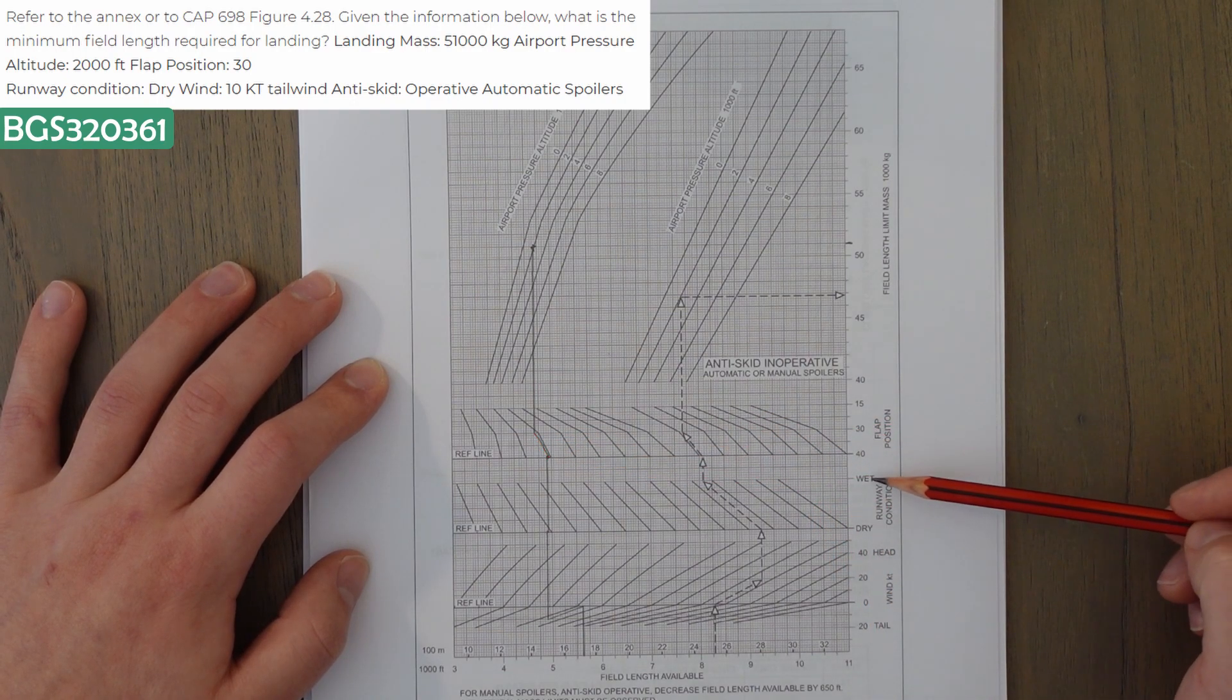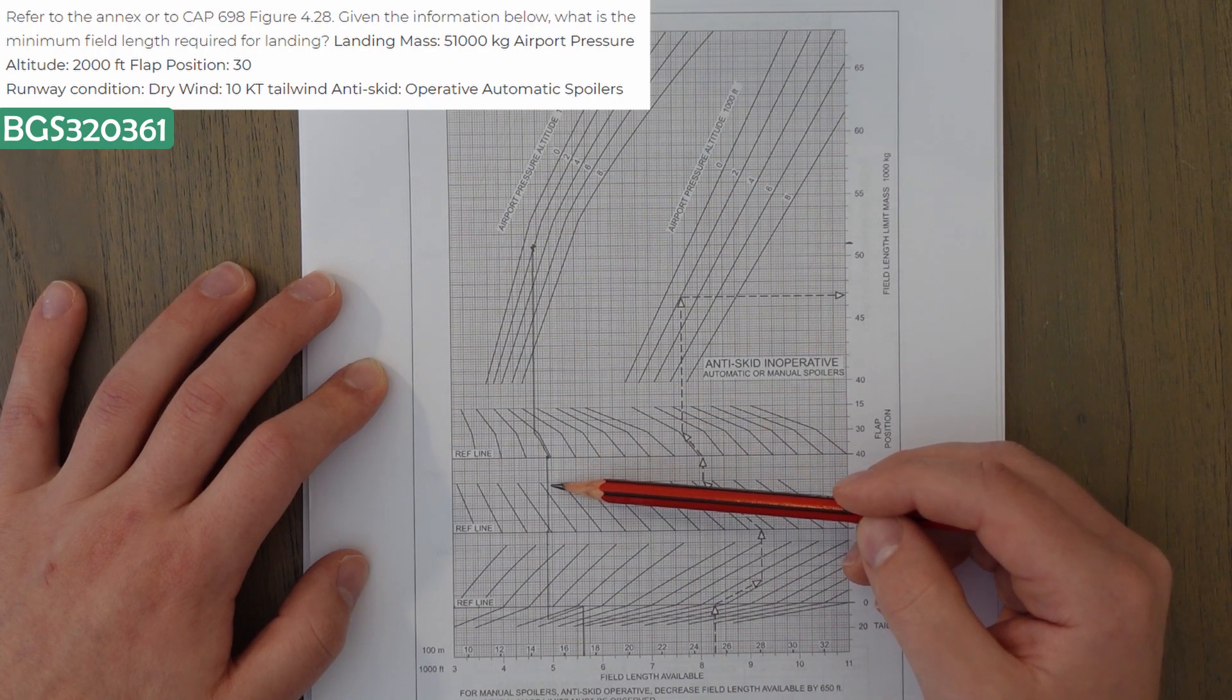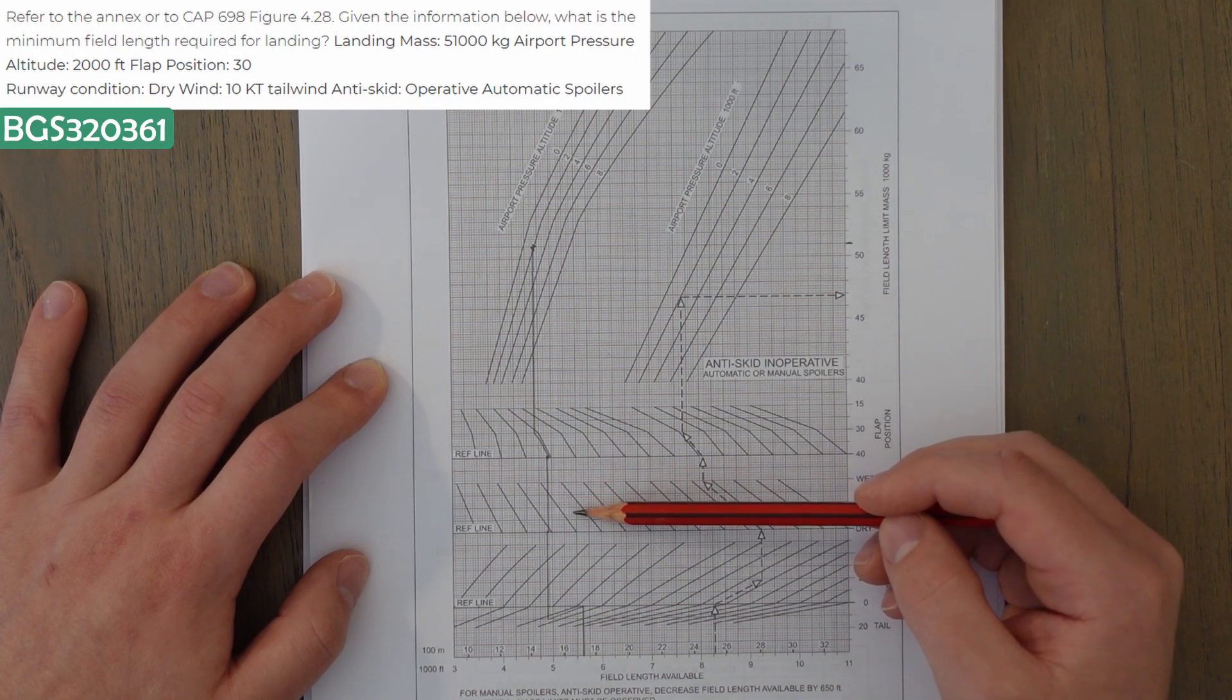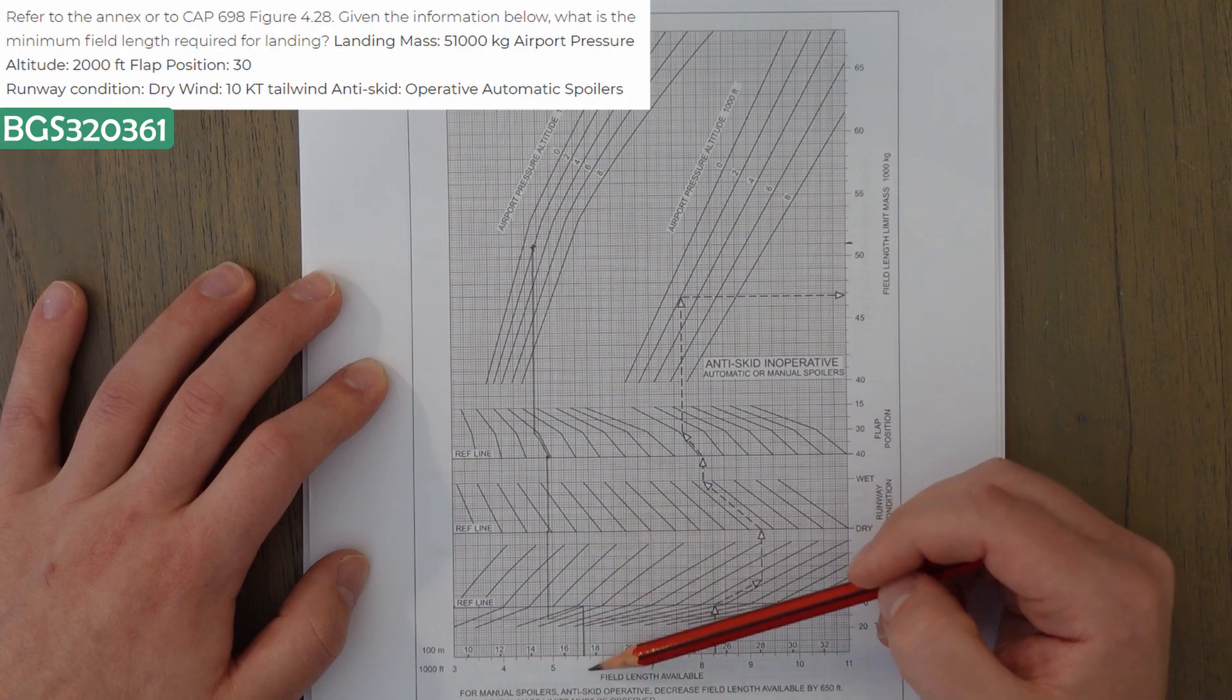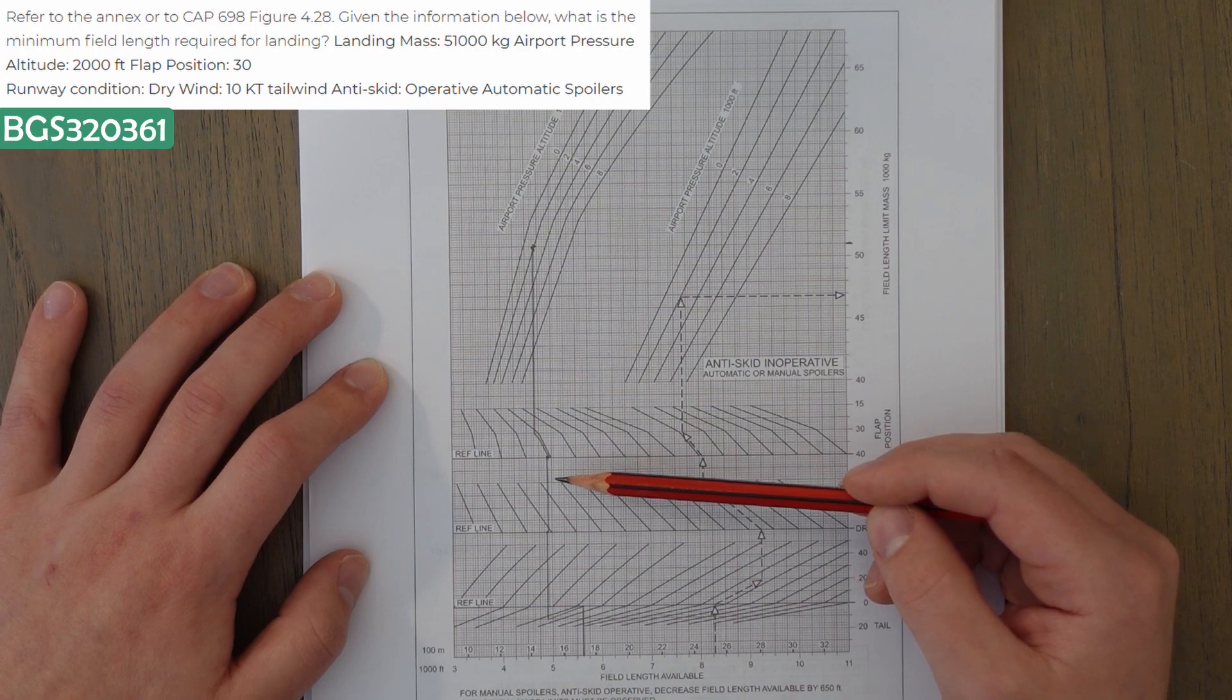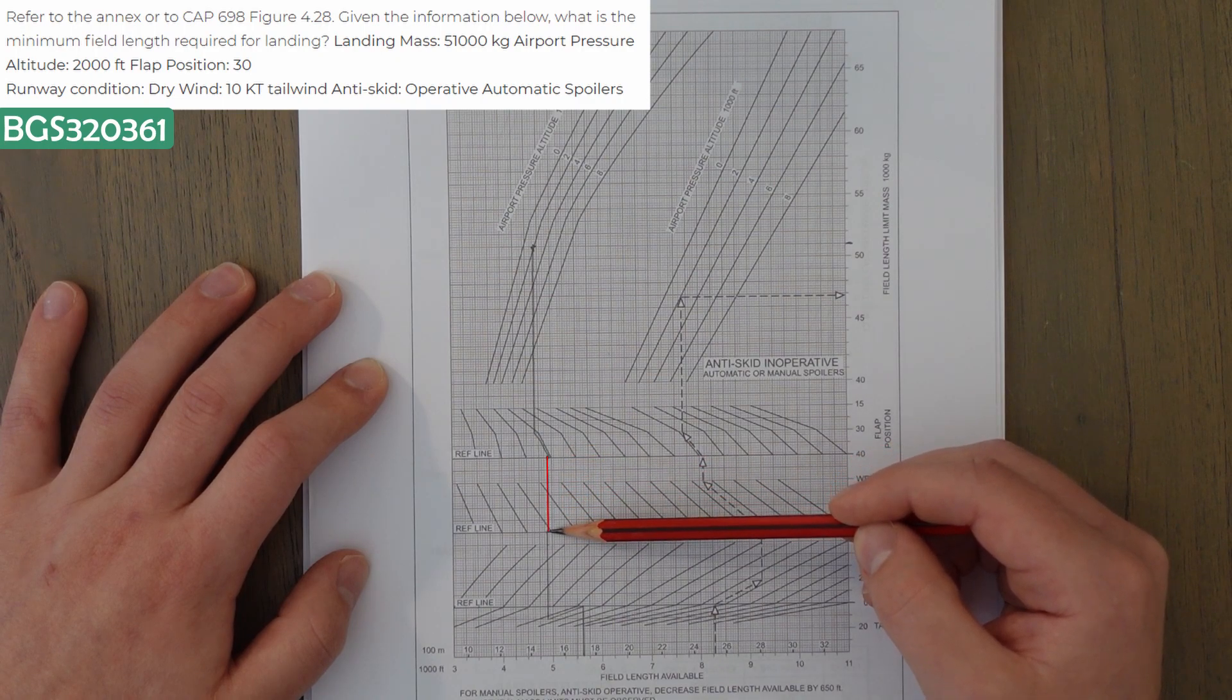From that point, we're then looking at going straight down to correct for either a wet or a dry runway. If it was a wet runway, it would increase our distance. So we'd stop at the wet point, follow the guide line along, and that increases our total distance. So that's an error check again. We know that we're not going to correct and make our distance longer because we've got a dry runway. So we just continue all the way down to the next reference line.